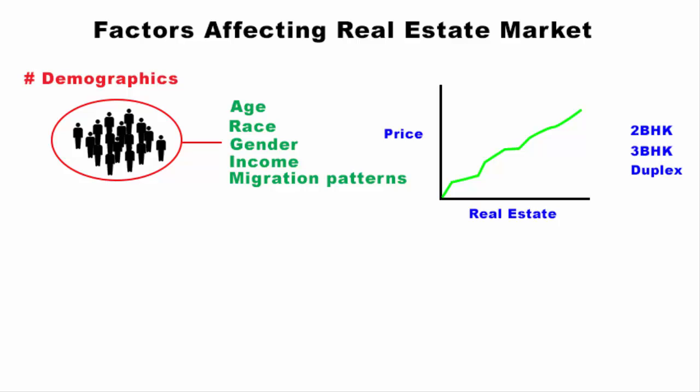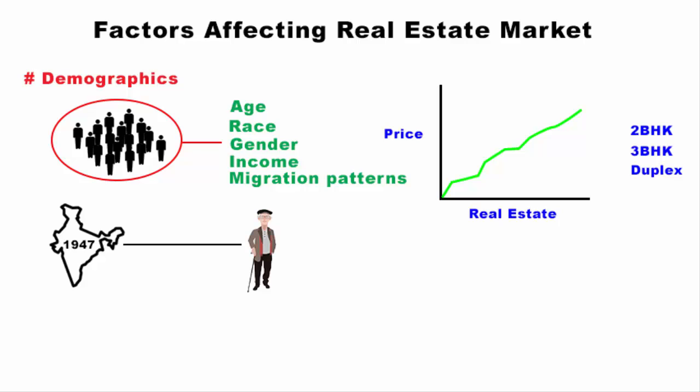If there is a substantial shift in the demographics of a nation, then it can have a huge impact on real estate trends for many decades. For example, India got independence in 1947. The average age of a retiree today in India is roughly around 60 years — in other words, people who were born between 1945 and 1965. These people have tremendous potential to influence the real estate market, with their retirement period falling around 2005 to 2025, which is the most interesting generational trend in a century.